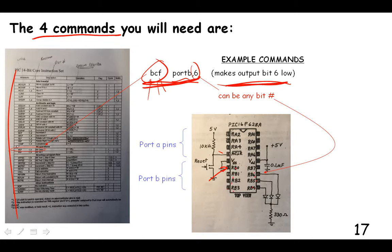And then here is the port B pins and we have eight pins. So we've got eight bits that we can input or output, and it starts at zero instead of one. So it goes zero, one, two, three, four, five, six, seven. So that's the eighth bit right there. And we're just going to be using output. So this particular command makes the output low.